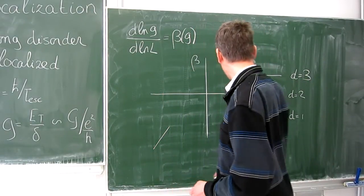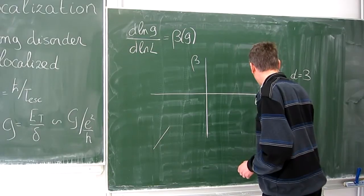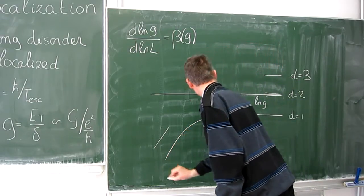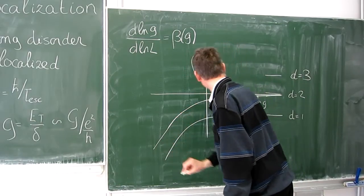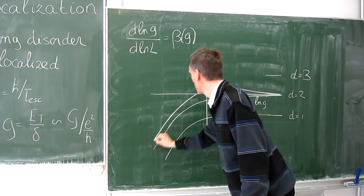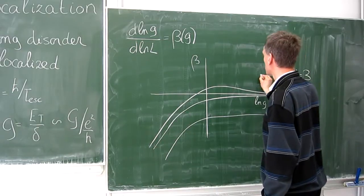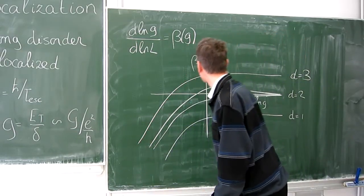Interpolating between these limits then gives this picture. For d is 1, something like that. For d is 2, orthogonal unitary, something like this. Symplectic, more like this. And for d is 3, looks like that.